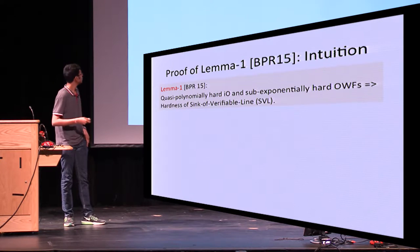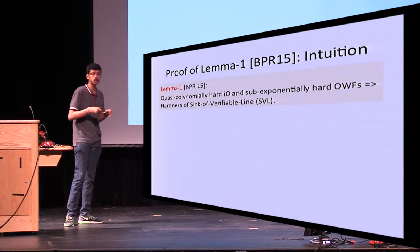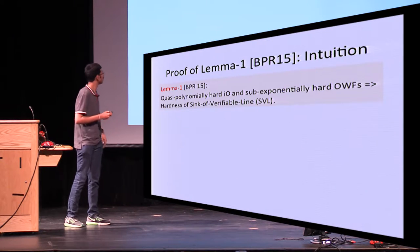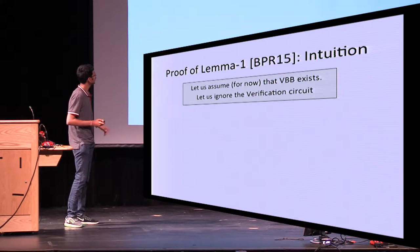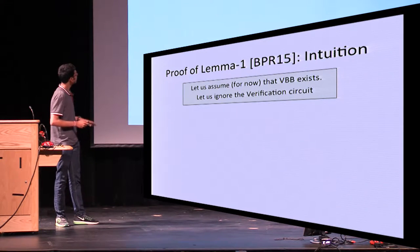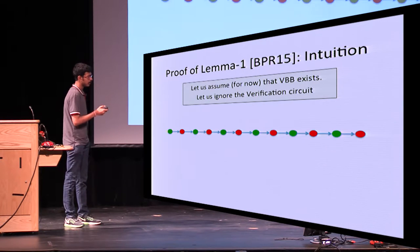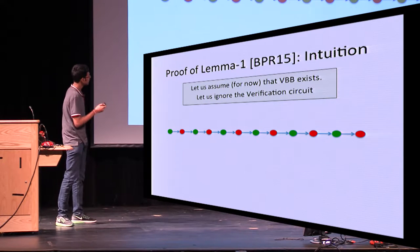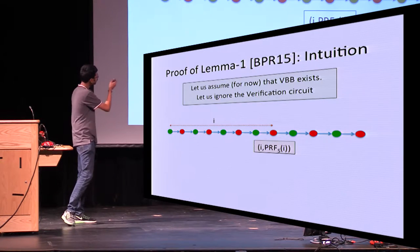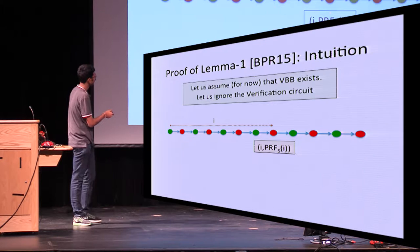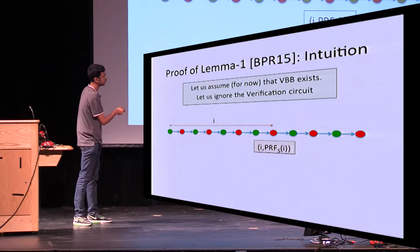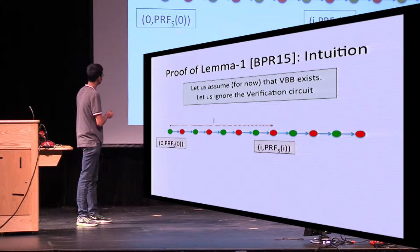Let's get some intuition on how obfuscation and one-way functions could be used to construct hard instances of Sink of Verifiable Line. Assuming VBB exists and ignoring the verification circuit for now, the ith node from the source is given by a node label i, followed by a PRF computation on i — this PRF computation can be thought of as some sort of signature on the message i.